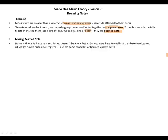When making beamed notes: notes with one tail — quavers and dotted quavers — have one beam. Semiquavers have two tails, so they have two beams, which are drawn quite close together. Here are some examples of beamed quaver notes. This is the beam and two quavers beamed together. And here are semiquavers with two beams drawn close together, beamed together.